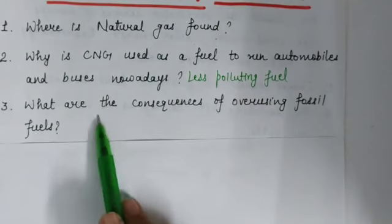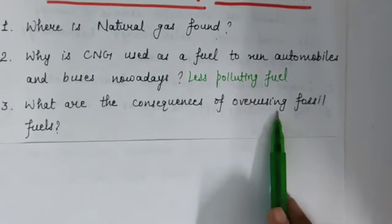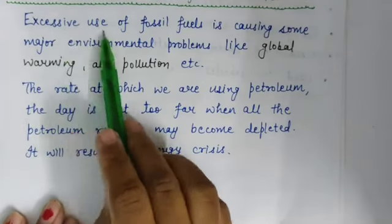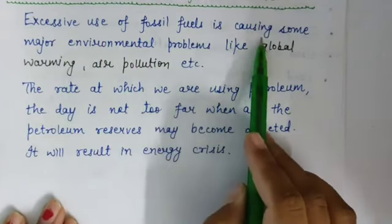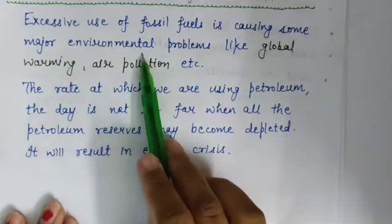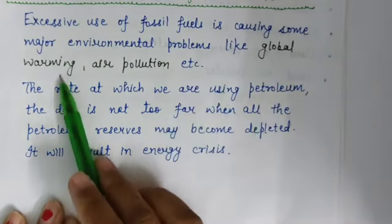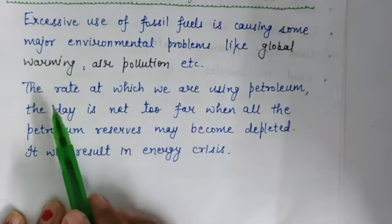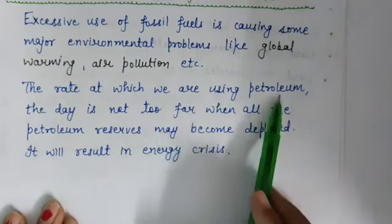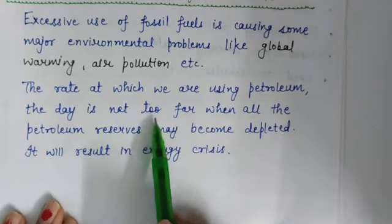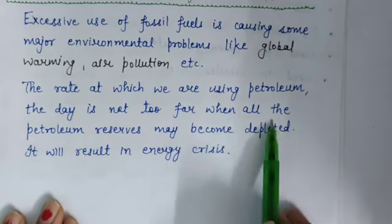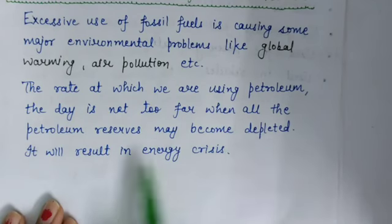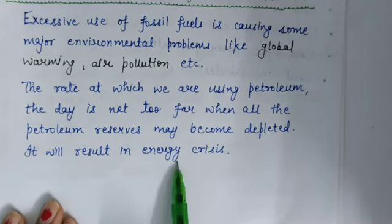Question 3 was: what are the consequences of overusing fossil fuels? Answer: excessive use of fossil fuels is causing major environmental problems like global warming and air pollution. Also, at the rate we are using petroleum, the day is not far when all petroleum reserves may become depleted, resulting in an energy crisis.